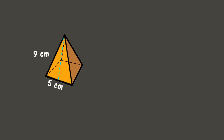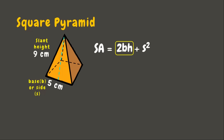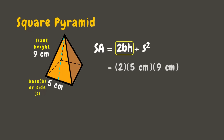Now we have a square pyramid whose slant height measures 9 centimeters, and the side of its base measures 5 centimeters. To solve for its surface area, we use the formula: 2 times the base times the height of the triangle, plus s squared. First, we have 2 times the base of the triangle, which is 5 centimeters, times the height, which is 9 centimeters — that is 90 square centimeters.